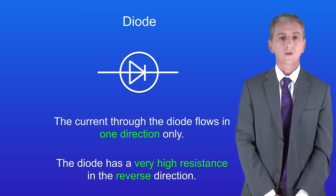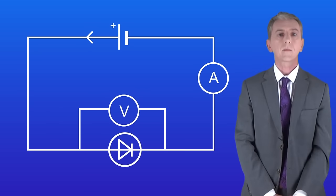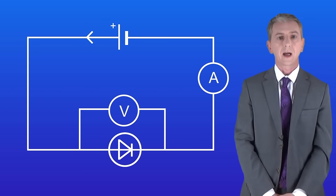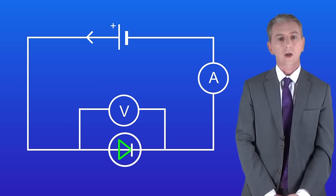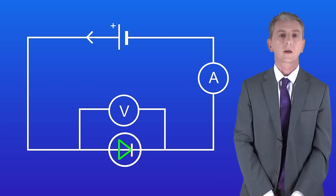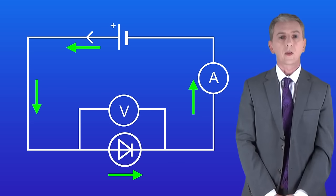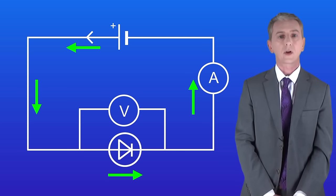I'm showing you a diode in a circuit here. If we look again at the symbol for a diode we can see it contains an arrow, and that shows us the direction that the conventional current must flow in. So here the current's flowing in the forward direction, and the diode allows it through.